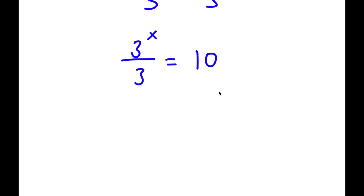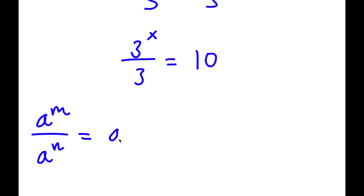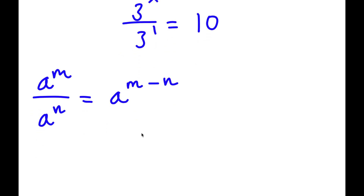If you didn't already know, if I have something in the form a to the power of m over a to the power of n, this is equal to a to the power of m minus n. So 3 to the power of x over 3 — well, 3 is the same thing as 3 to the power of 1 — so I have 3 to the power of x over 3 to the power of 1, which simplifies to 3 to the power of x minus 1 is equal to 10.